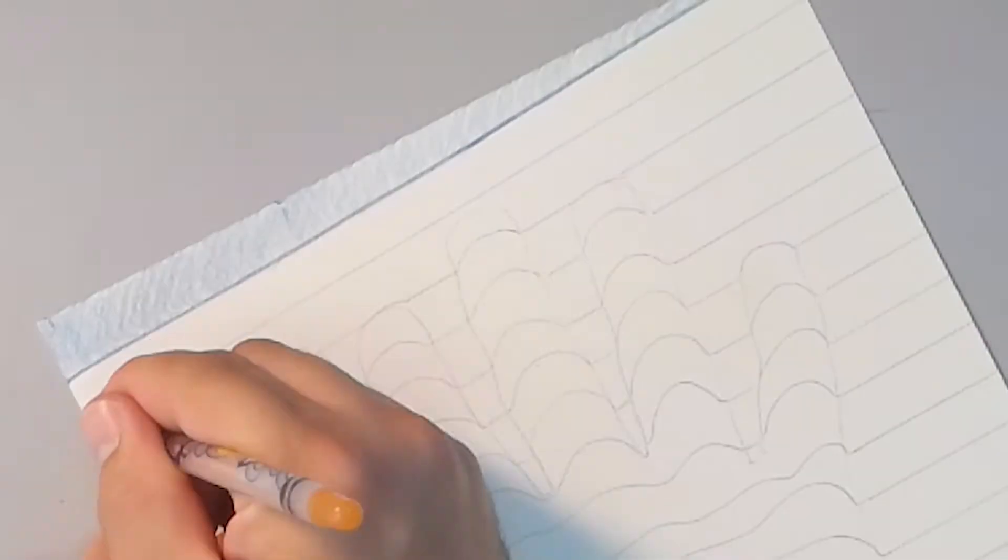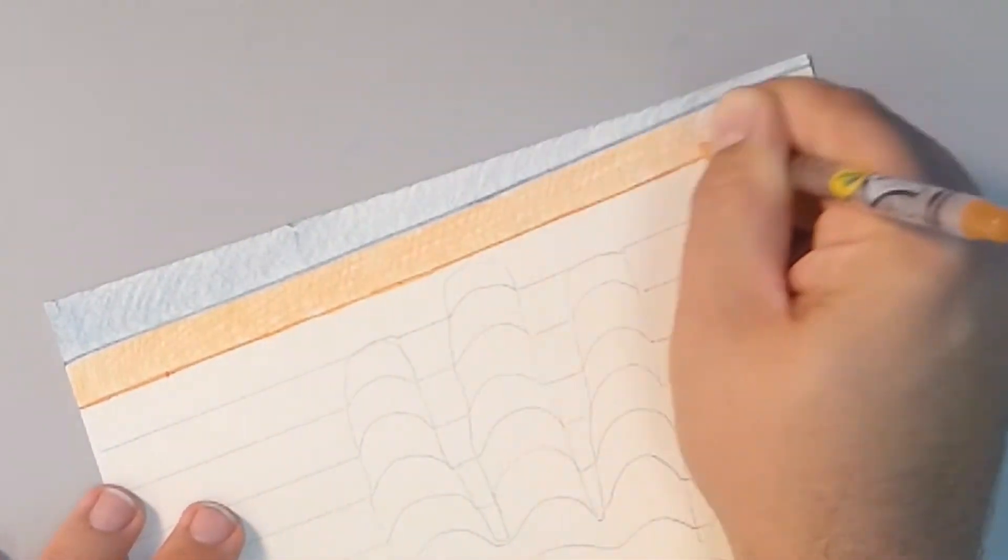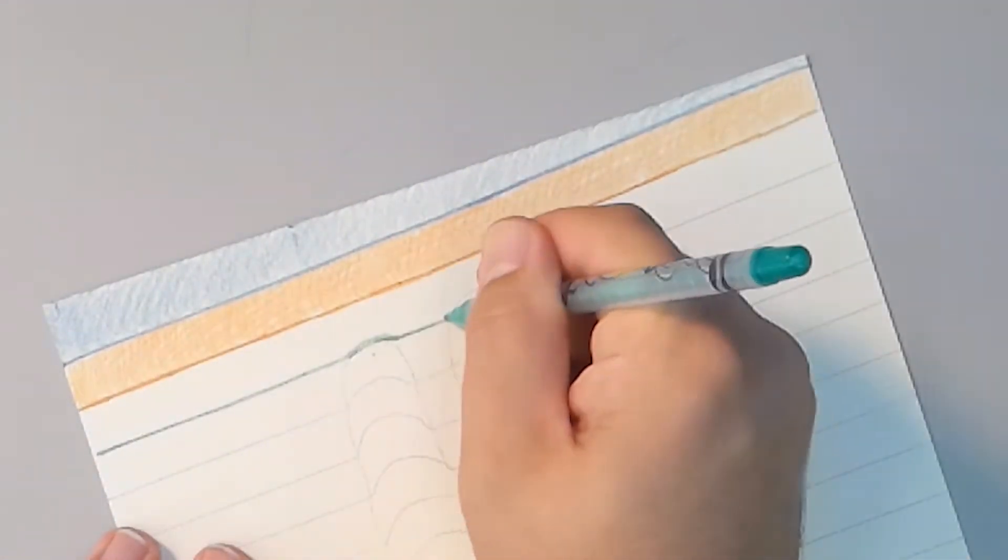When you're coloring the spaces around your fingers and your hand, I want you to color with a medium pressure on your pencil. It shouldn't be really dark, and it shouldn't be really light.